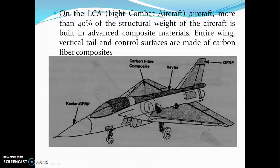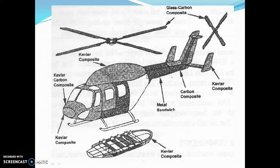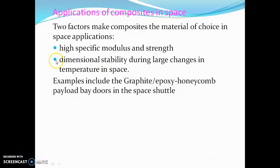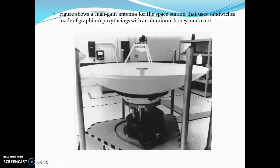On the light combat aircraft, more than 40% of the structural weight is built from advanced composite materials. The entire wing, vertical wing, and control surfaces are made from carbon fiber composites. By using carbon fiber, they can reduce weight and increase the required structural properties. It is also used in space applications, offering high specific modulus, strength, and dimensional stability.